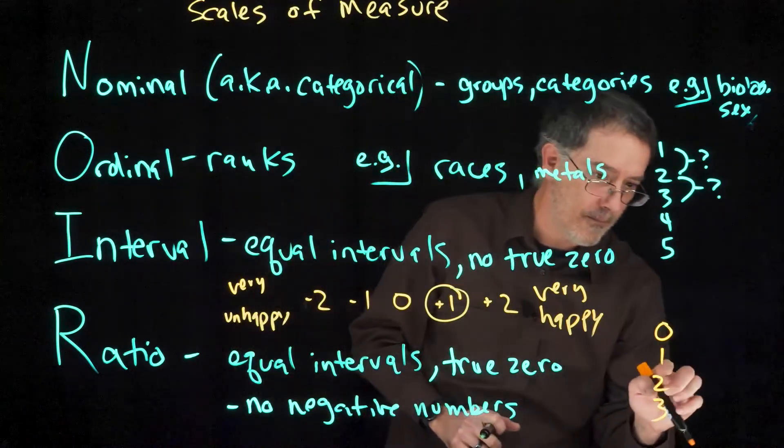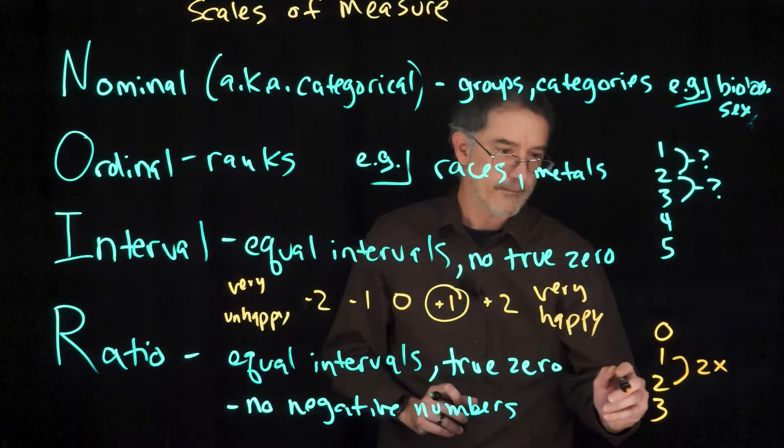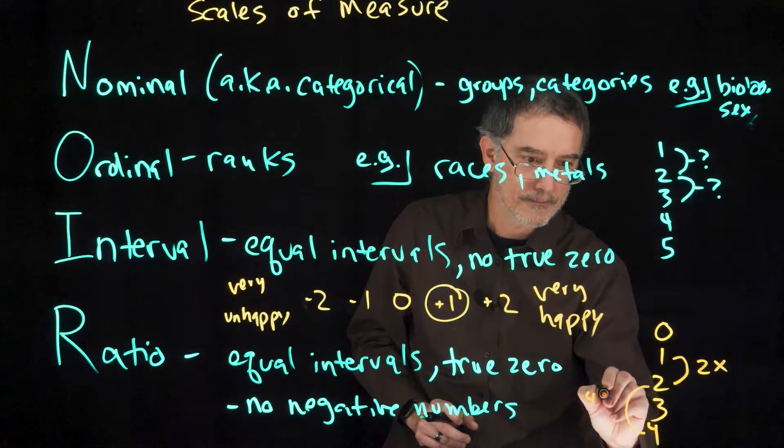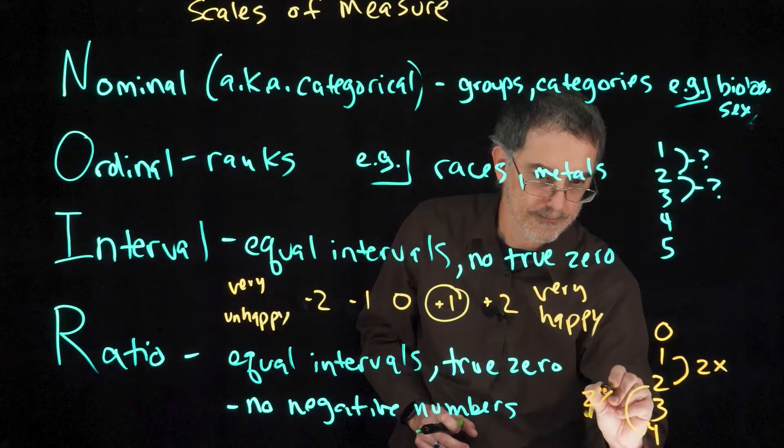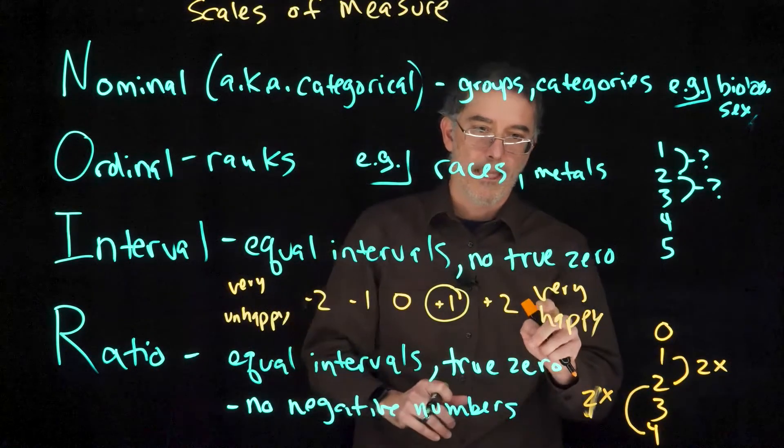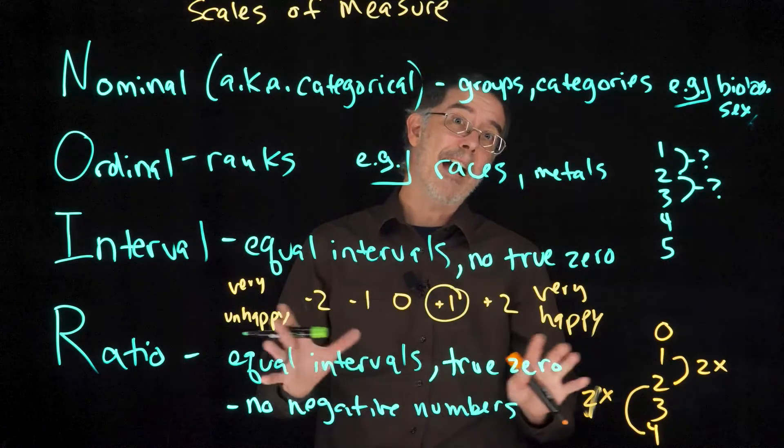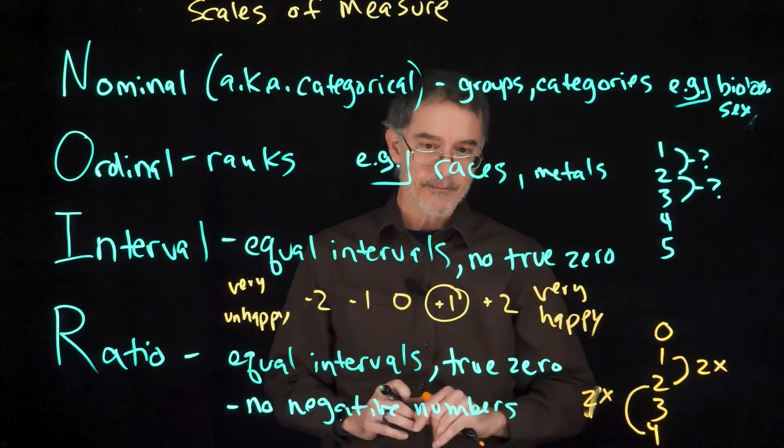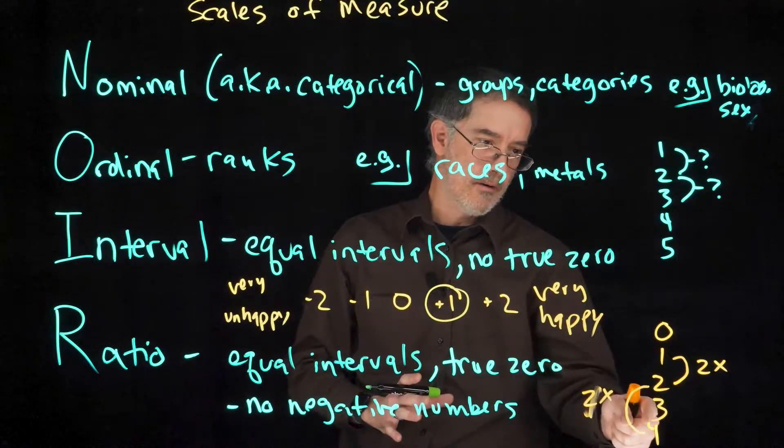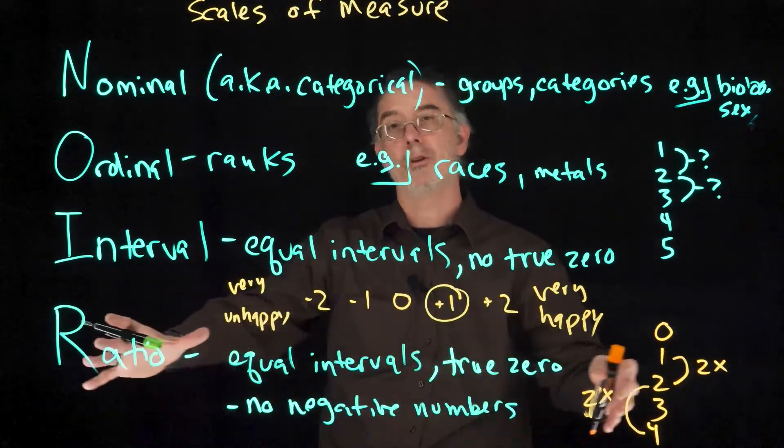The reason it is called ratio is because two is twice as many as one. Four would be twice as many as two. Those kinds of ratios only make sense with ratio variables. If your happiness is two on this scale, and my happiness is one, that does not make you twice as happy as me. It just does not make any sense with these interval scales to say that two is twice as one, or four is four times as one. But it totally makes sense with these ratio variables, which again are just the most normal numbers that you are familiar with.